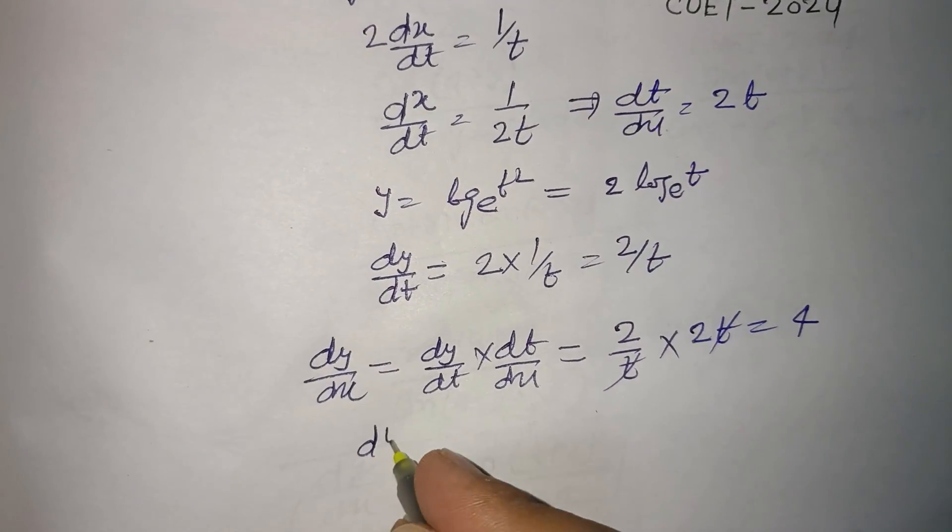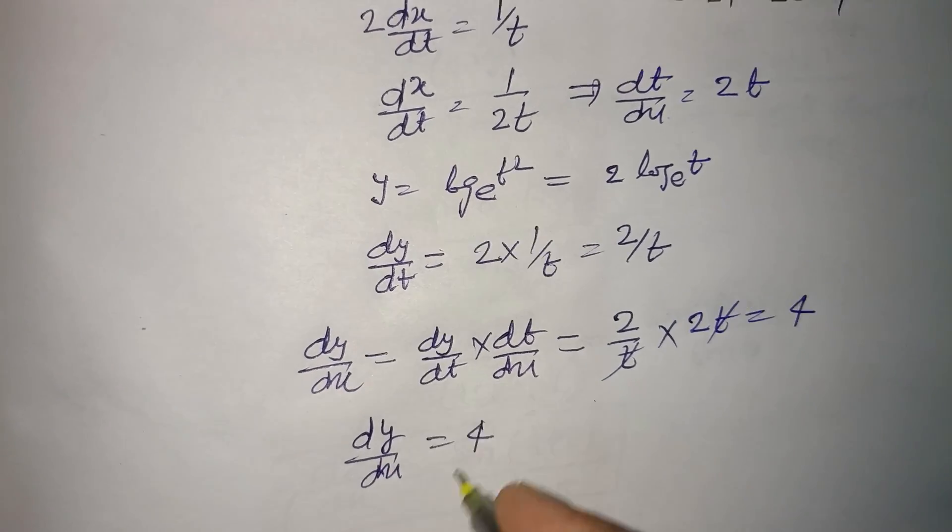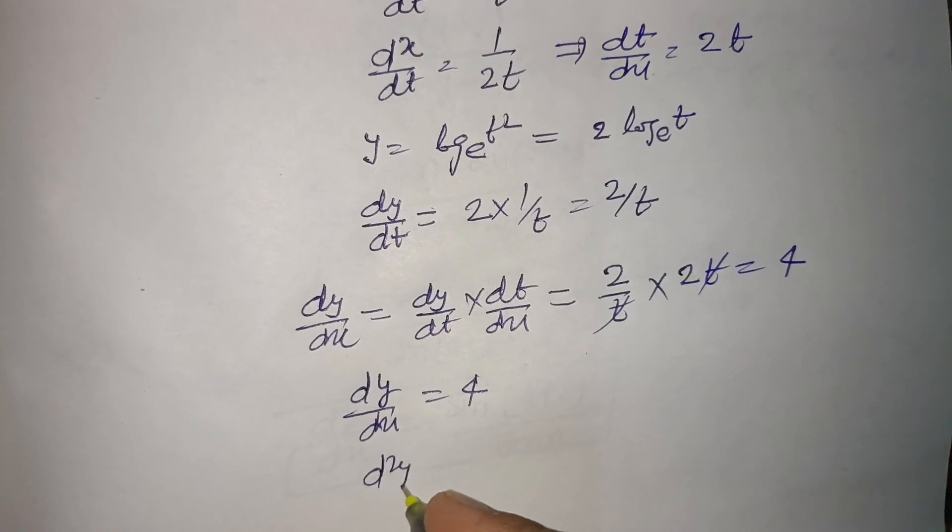dx equals 4, which is constant. Now again differentiating: d squared y over dx squared with respect to x,